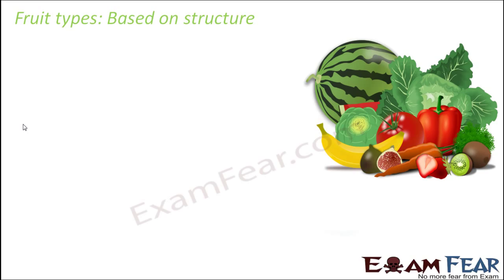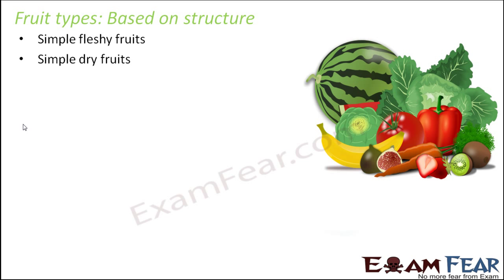True fruit and false fruit are based on origin — whether the fruit developed from the ovary or from some other plant part. Based on structure, fruits are divided into the following types: simple fleshy fruits, simple dry fruits, aggregate fruits, and multiple fruits. Let us quickly talk about each of these types in detail one by one.